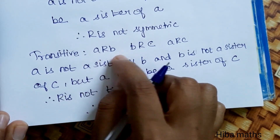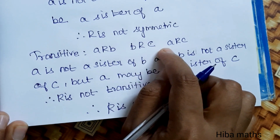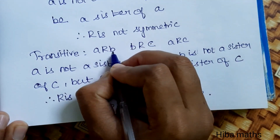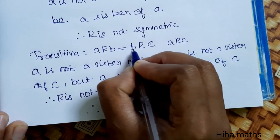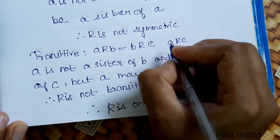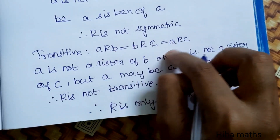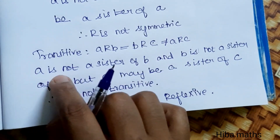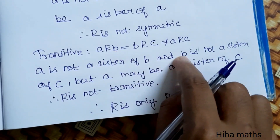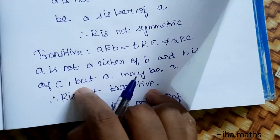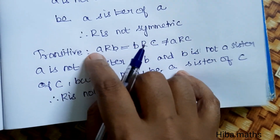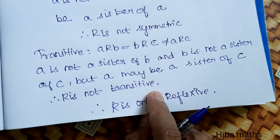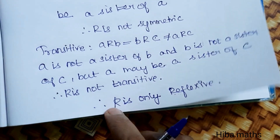A relates B and A relates C, but A may be a sister of C. So the relation is not Transitive.